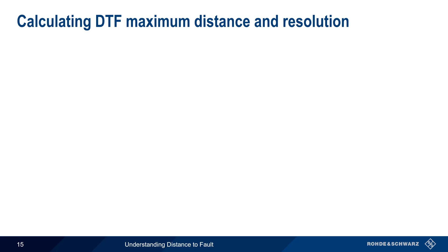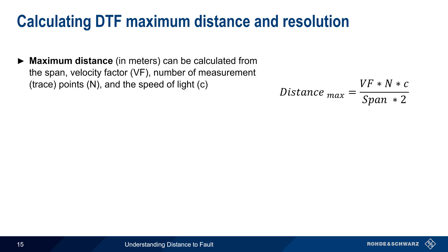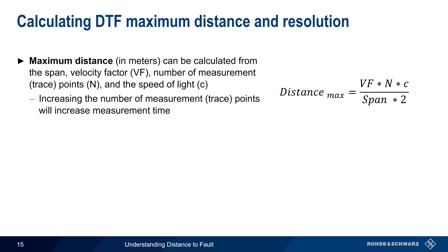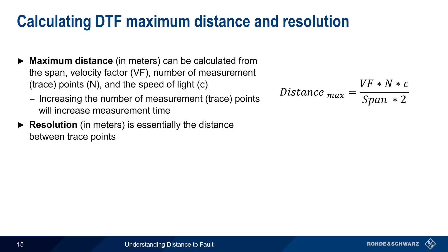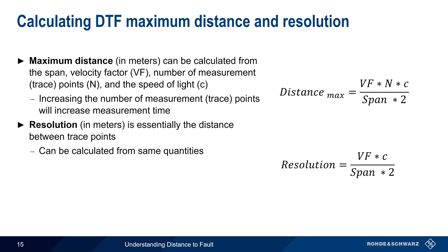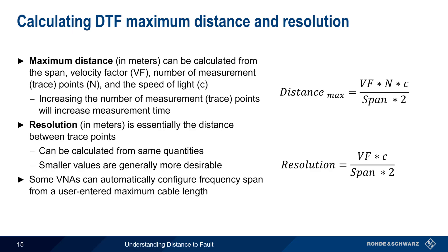The maximum distance in meters can be calculated from the selected span, the cable's velocity factor, the configured number of measurement or trace points, and the speed of light. We can increase maximum distance either by decreasing the frequency span or by increasing the number of measurement points, n. However, increasing the number of measurement points will also increase the time needed to make a measurement. Resolution, also in meters, is essentially the distance between trace points, and is calculated using velocity factor and span. Smaller values of resolution are more desirable, since this provides greater detail and the ability to distinguish between closely spaced faults. When configuring DTF measurements on a VNA, it's often possible to enter a maximum cable length and have the VNA automatically determine an appropriate frequency span.